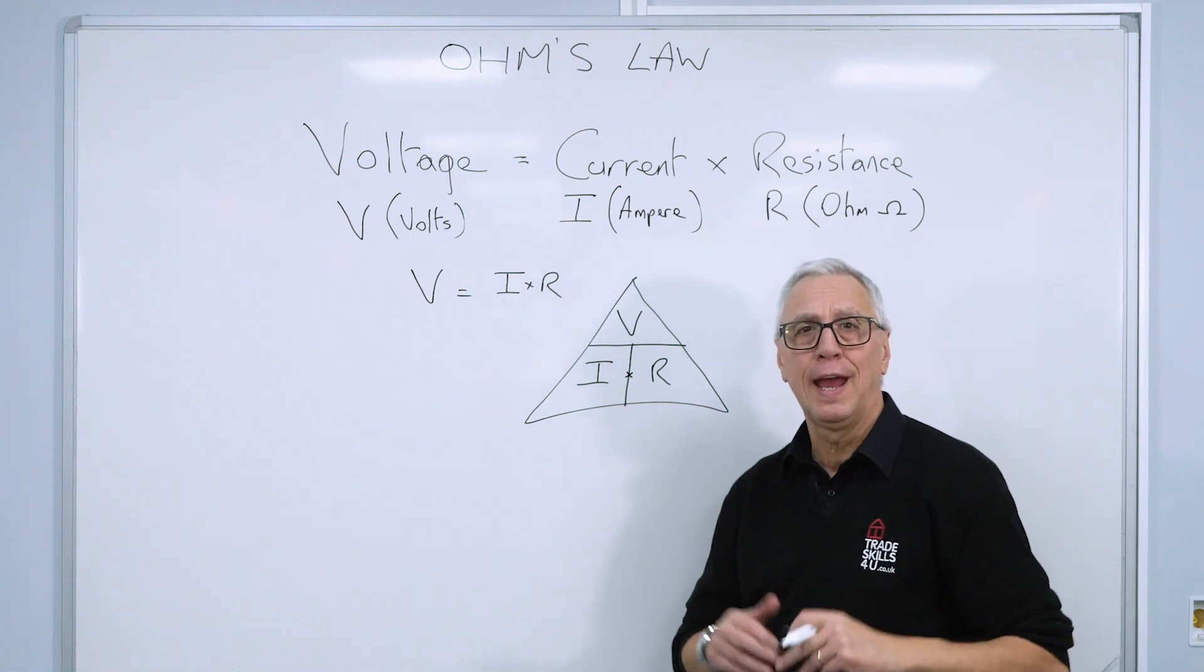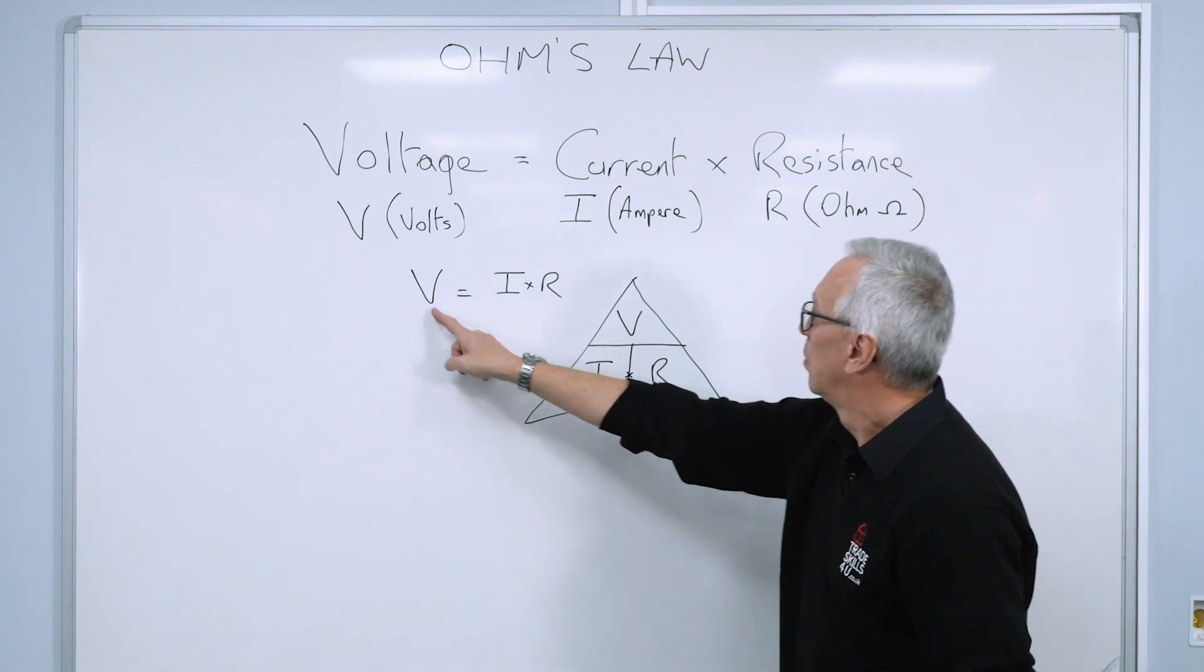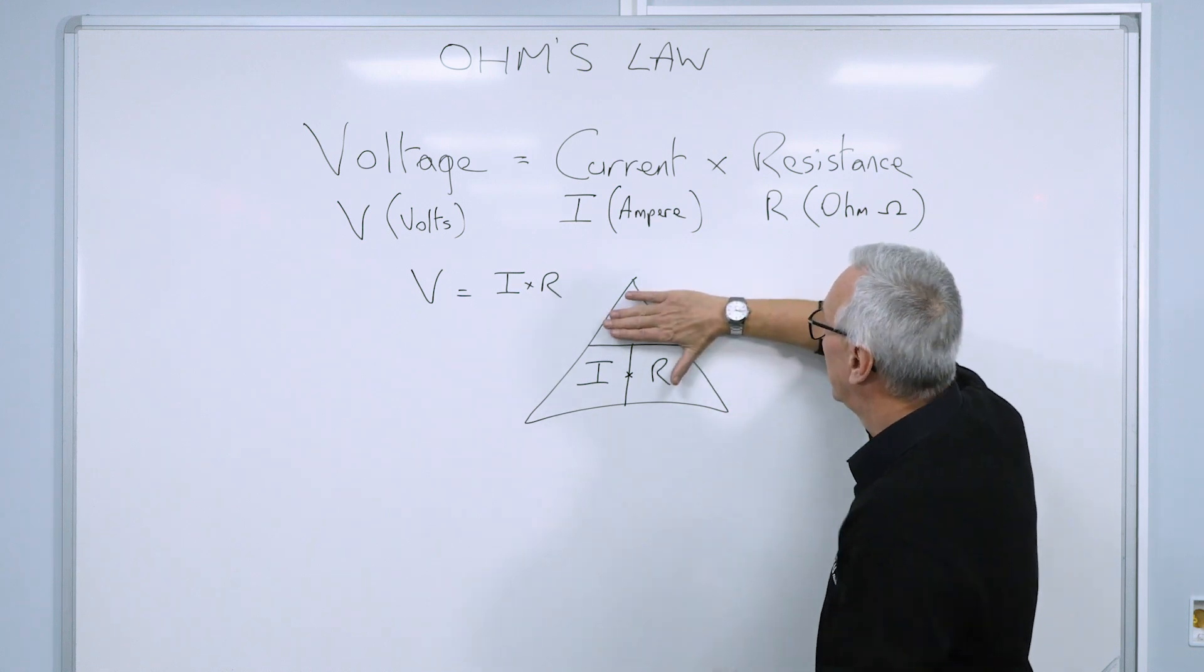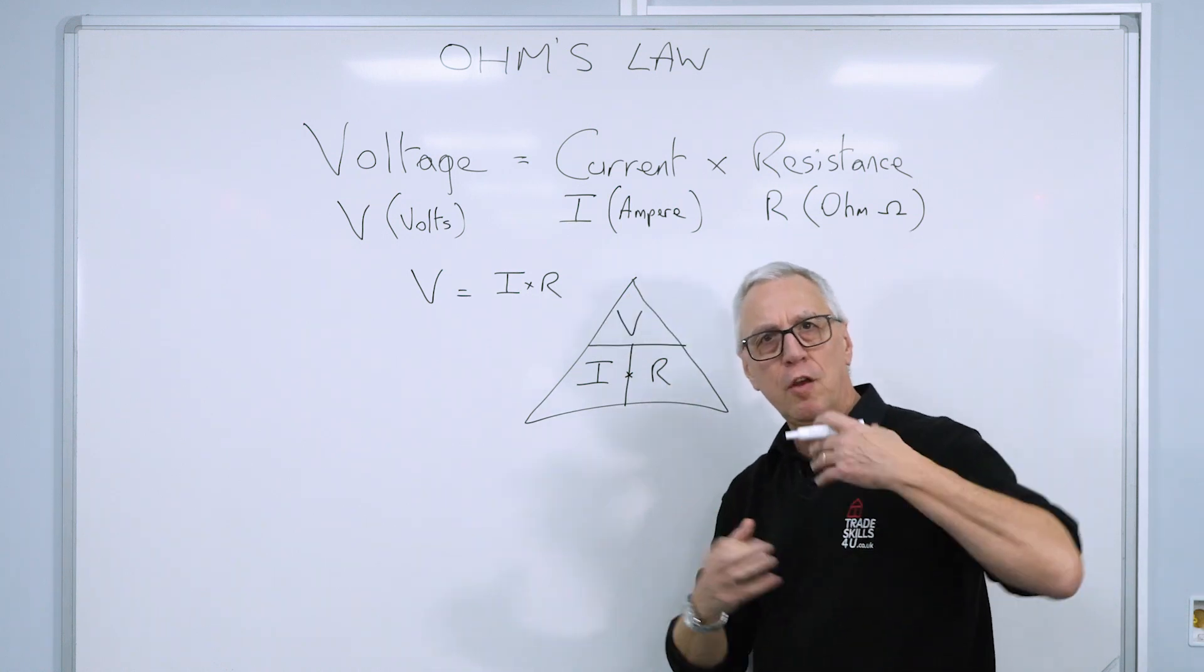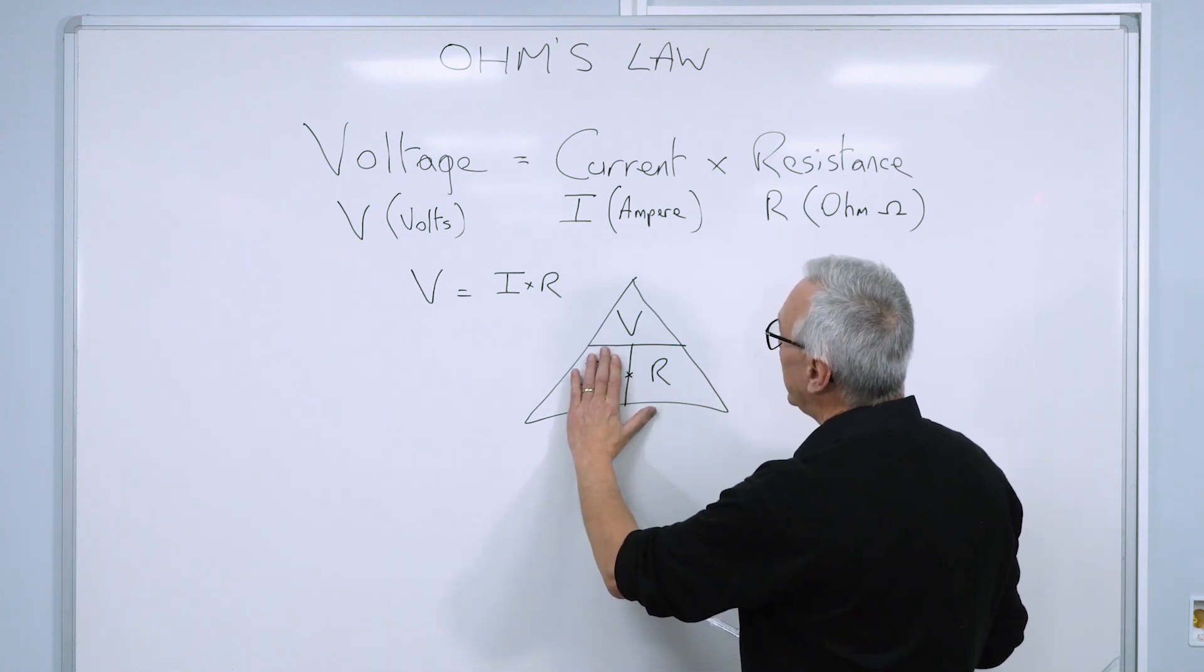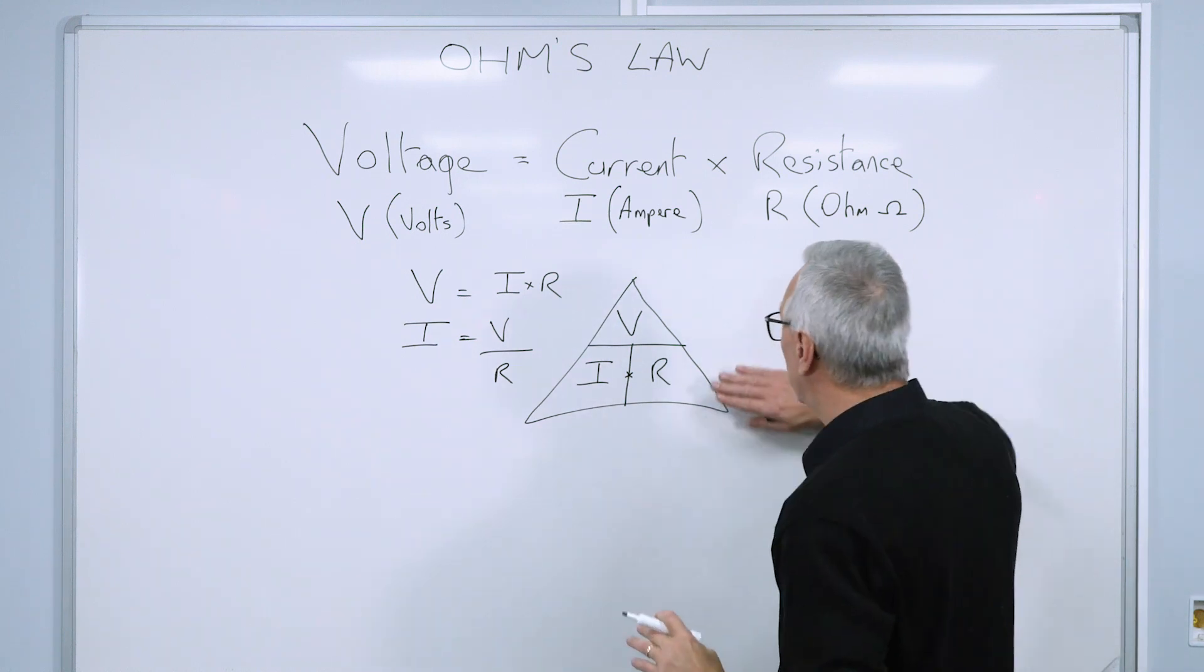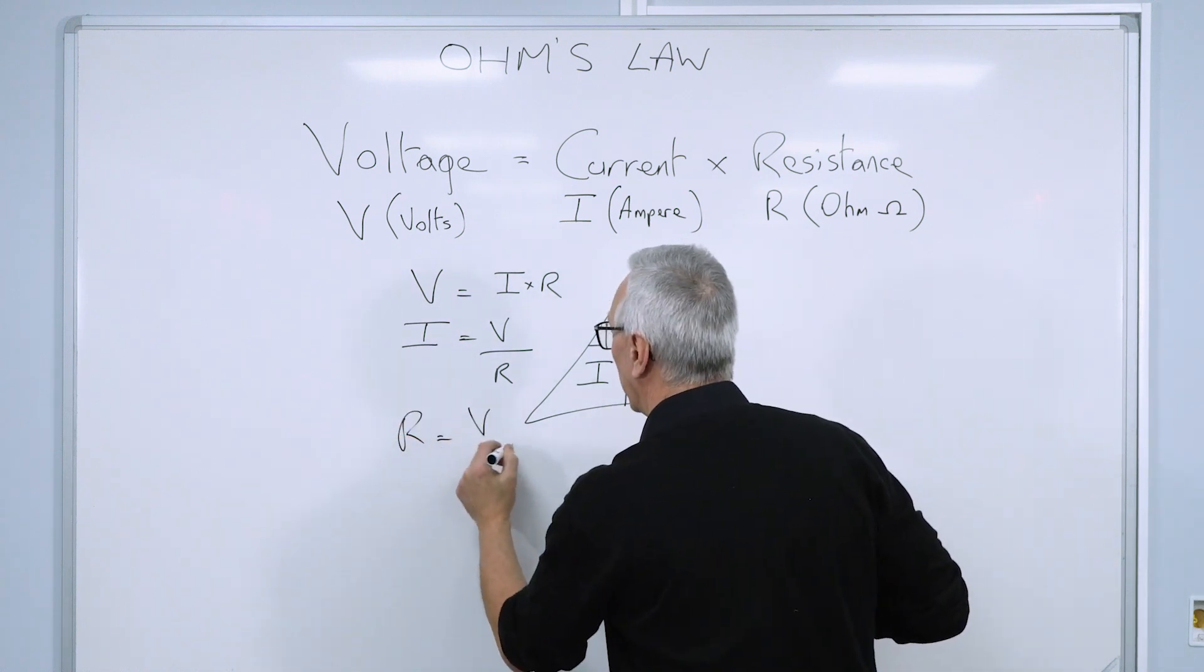It's used for working out the values in a circuit. So if we've got a circuit and we want to know what the voltage is, this is Ohm's law, voltage is current times resistance. A good way to do it is to cover up the value that you're looking for. So we cover up V, and we get V equals I times R. Now this is really useful to get the other values. Let's just say we were trying to find the current. Let's cover up the current, and you get I equals V divided by R. And if we want to find the resistance, let's cover it up. Resistance is voltage divided by current.